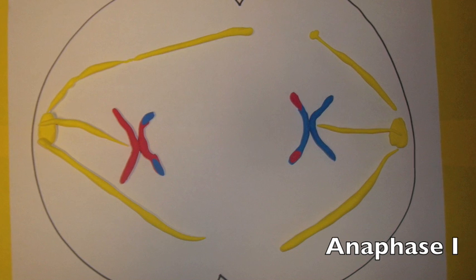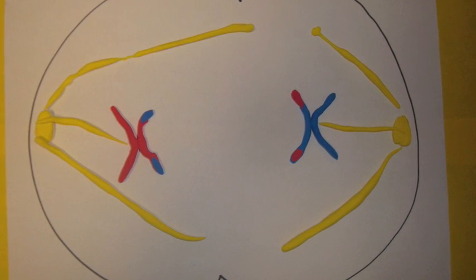In anaphase I, tetrads pull apart and chromosomes with two chromatids move towards the poles.